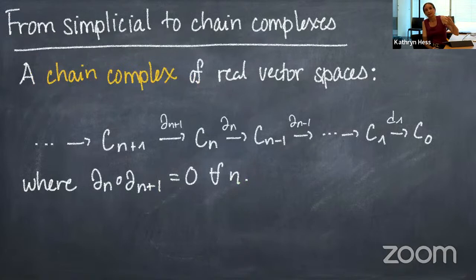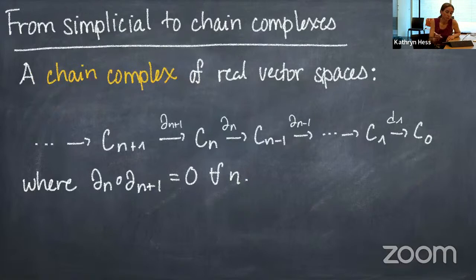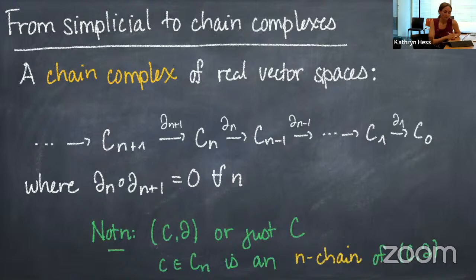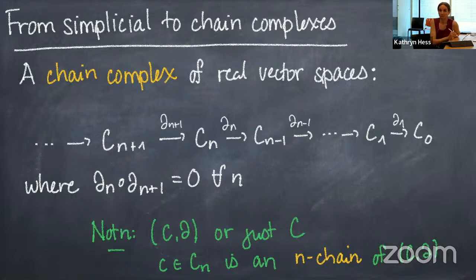To translate this combinatorial topological world into an algebraic world, the crucial notion is that of a chain complex of real vector spaces. This consists of a bunch of real vector spaces, one for each natural number, together with linear maps between these vector spaces, with the condition that the composite of any two consecutive maps is zero. The nth homology of the chain complex measures the difference between the kernel of one map and the image of the next, telling you how close it is to being an exact sequence.